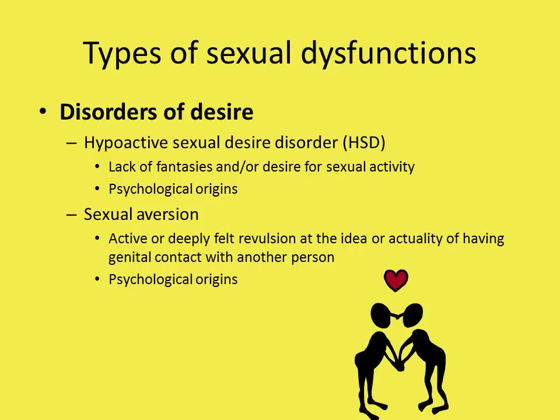The second disorder of desire is sexual aversion, which refers to feeling repulsed at the idea of genital contact with another person — finding sexual contact repulsive, or even having some type of intense fear or panic at the thought of it. The origins are also considered to be psychological: anxiety, depression, sexual socialization, sexual assault, or abuse.